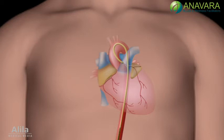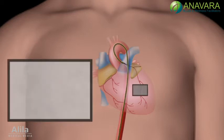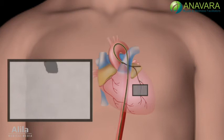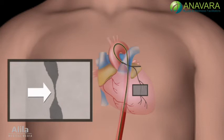A radio-opaque dye is injected through the catheter into the coronary artery. This enables real-time visualization of the artery using x-ray imaging. The narrowed part of an artery would appear as a bottleneck on an x-ray image.